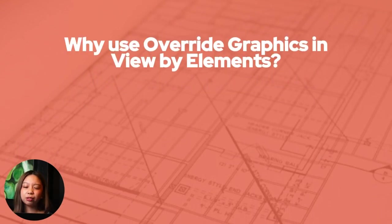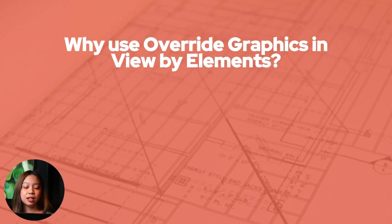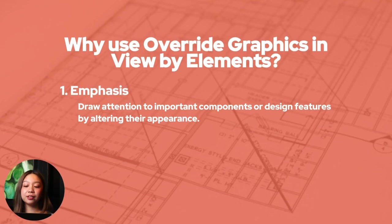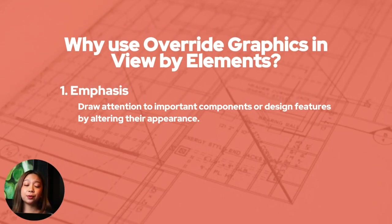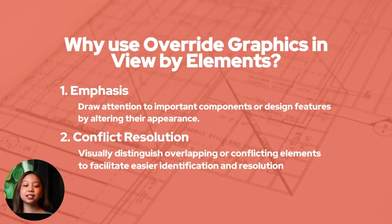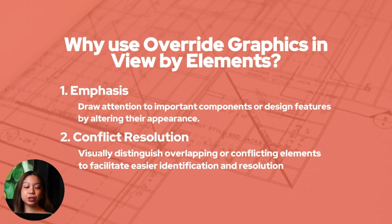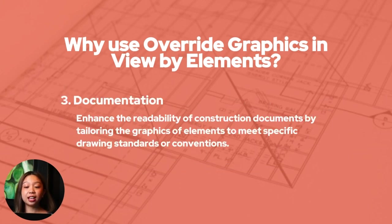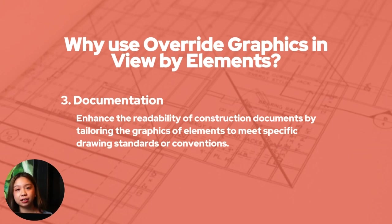Why use override graphics in view by elements? First, emphasis: it draws attention to important components or design features by altering their appearance. Second, conflict resolution: visually distinguish overlapping or conflicting elements to facilitate easier identification and resolution. Third, documentation: enhance the readability of construction documents by tailoring the graphics of elements to meet specific drawing standards or conventions.